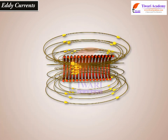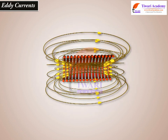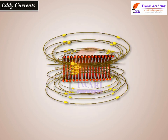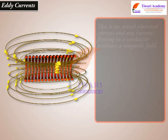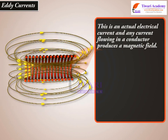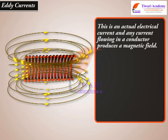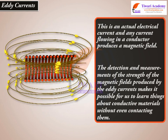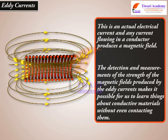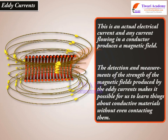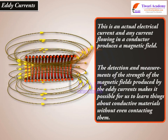Just like in our transformer experiment, these induced eddy currents generate their own magnetic field. After all, this is an actual electrical current and any current flowing in a conductor produces a magnetic field. The detection and measurement of the strength of the magnetic fields produced by the eddy currents makes it possible for us to learn things about conductive materials without even contacting them.